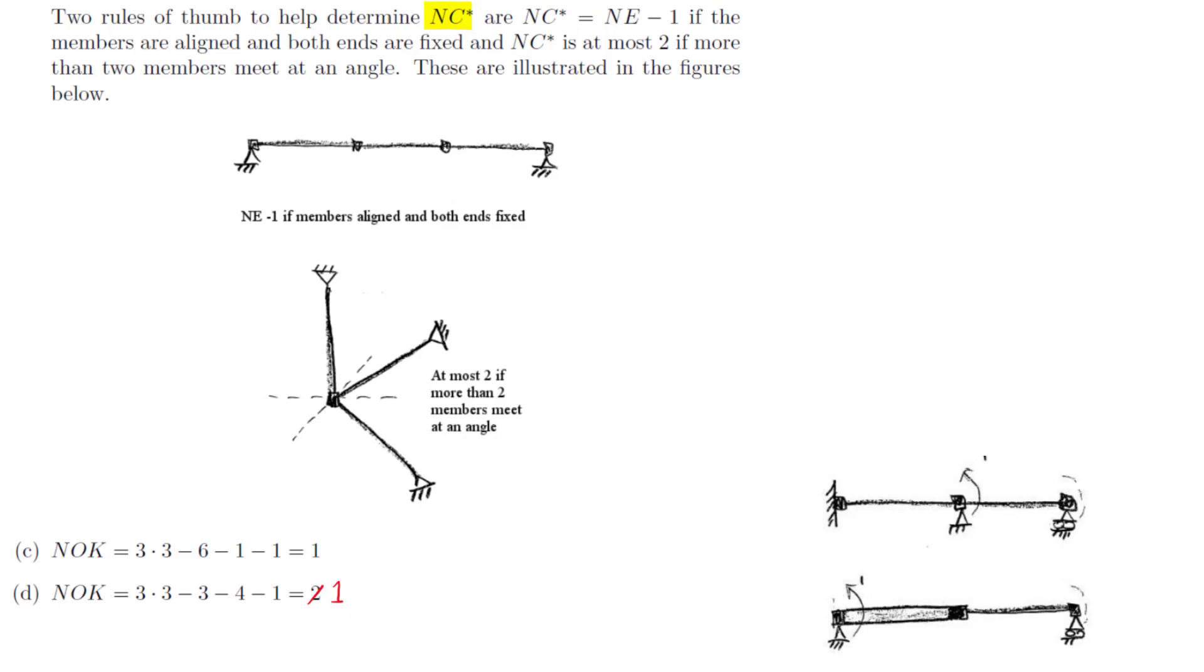In the first case, if all the members are aligned and both ends are fixed against translation, then we have to subtract 1 from the number of members. Exactly as in the example above, one of the constraints due to the restraint is going to be redundant with the constraint due to the axial rigidity of the member, and we can count at most one of those.